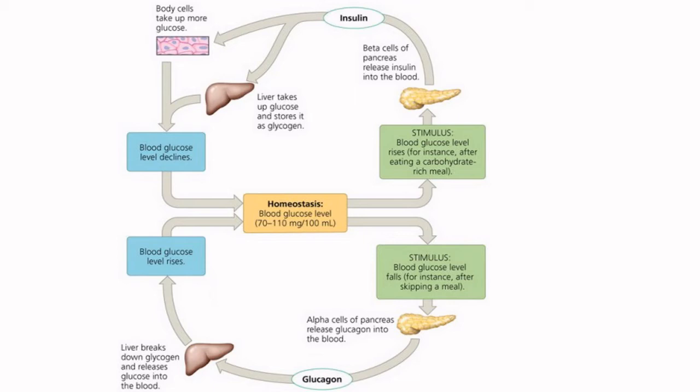What does antagonistic mean? It means their actions are opposite. You might have heard this term in relation to antagonistic muscle pairs, like the bicep and the tricep — they work against each other. Insulin causes a drop in blood sugar; glucagon causes a rise in blood sugar. They have opposite effects, so they are antagonistic hormones.